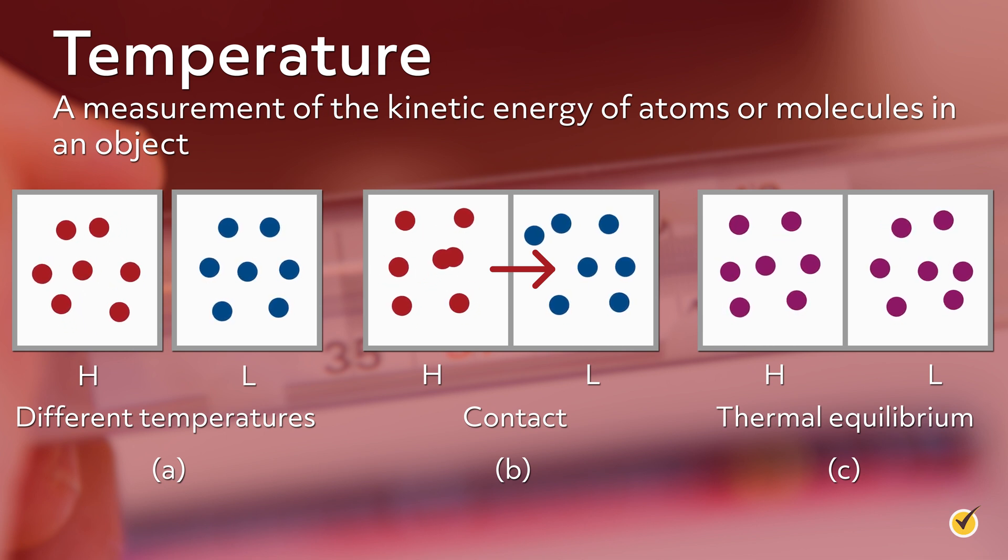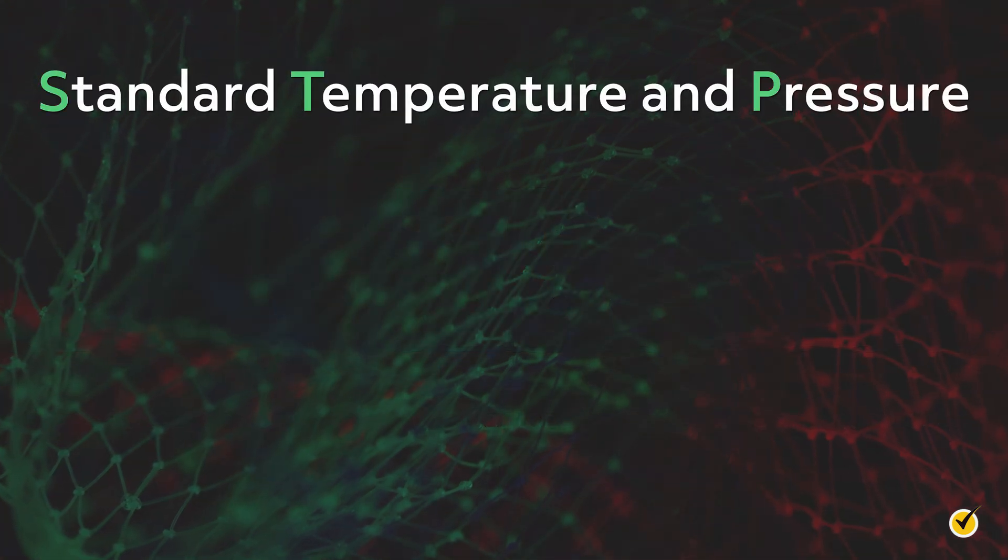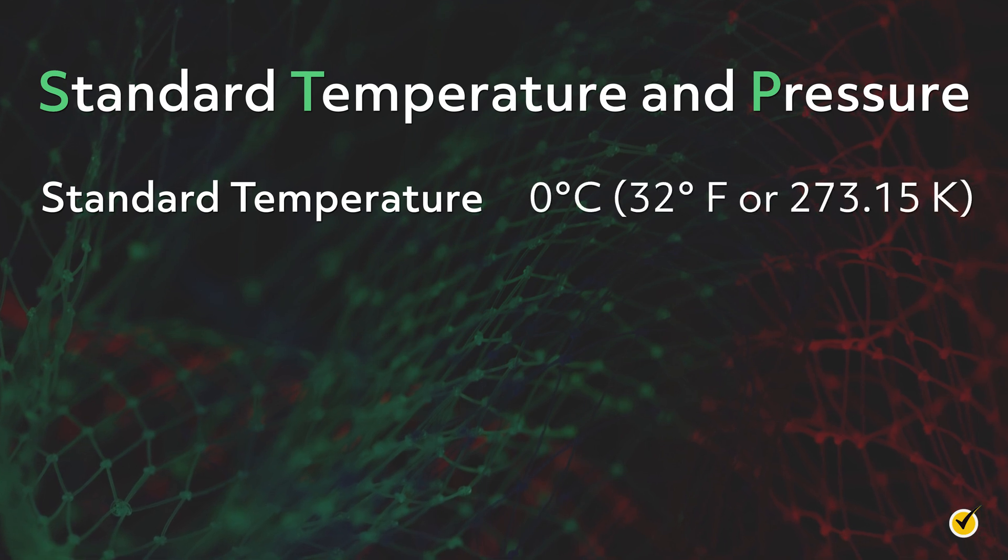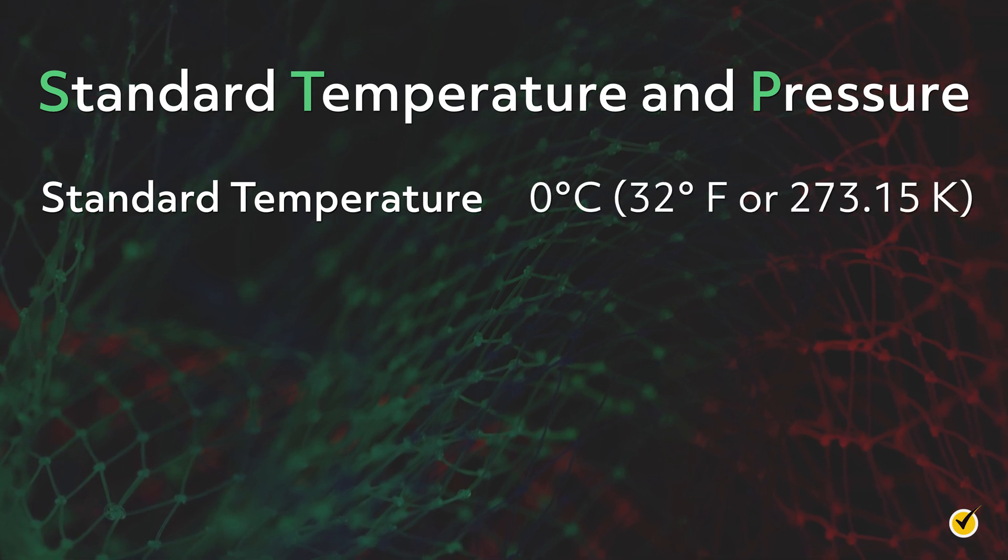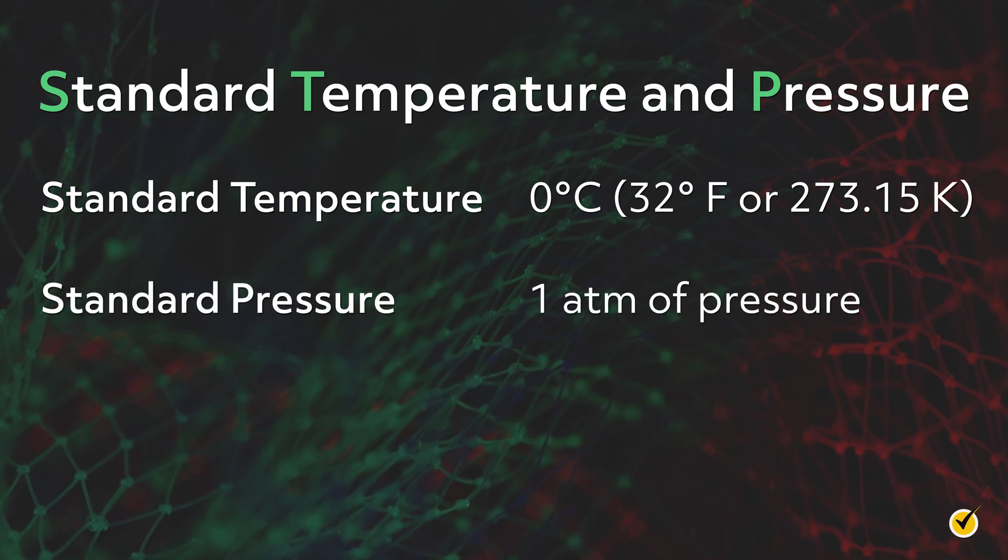Scientists and engineers often use a set of conditions referred to as standard temperature and pressure, or STP. Standard temperature is defined as zero degrees Celsius, which is 32 degrees Fahrenheit or 273.15 Kelvin. And standard pressure is defined as one atmosphere of pressure.